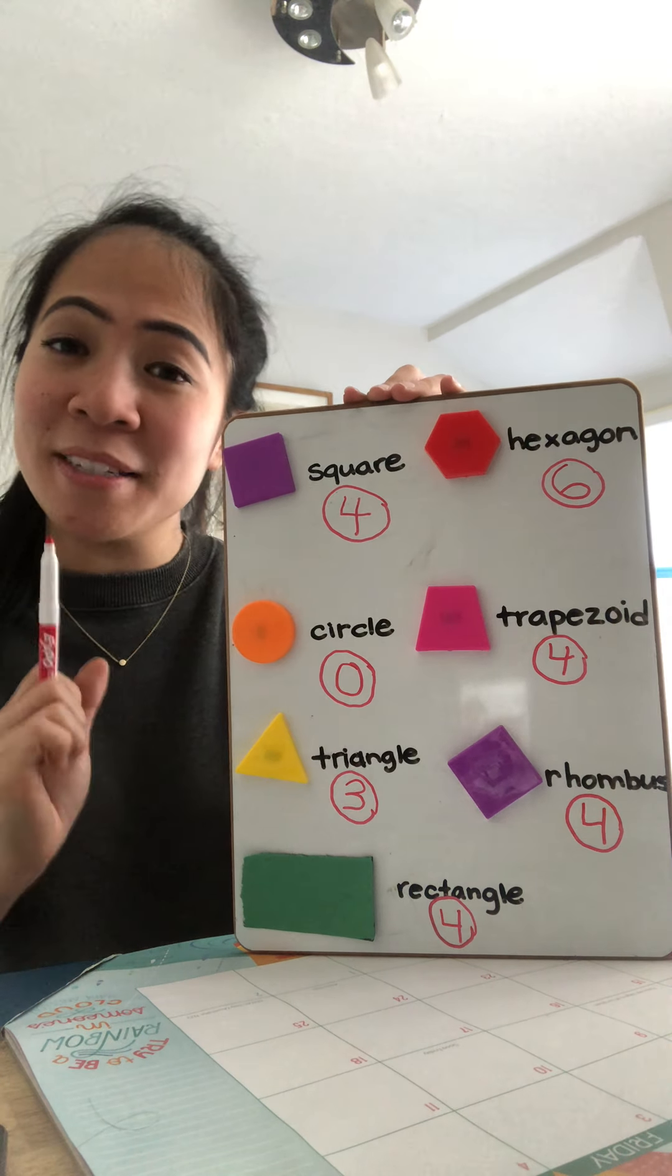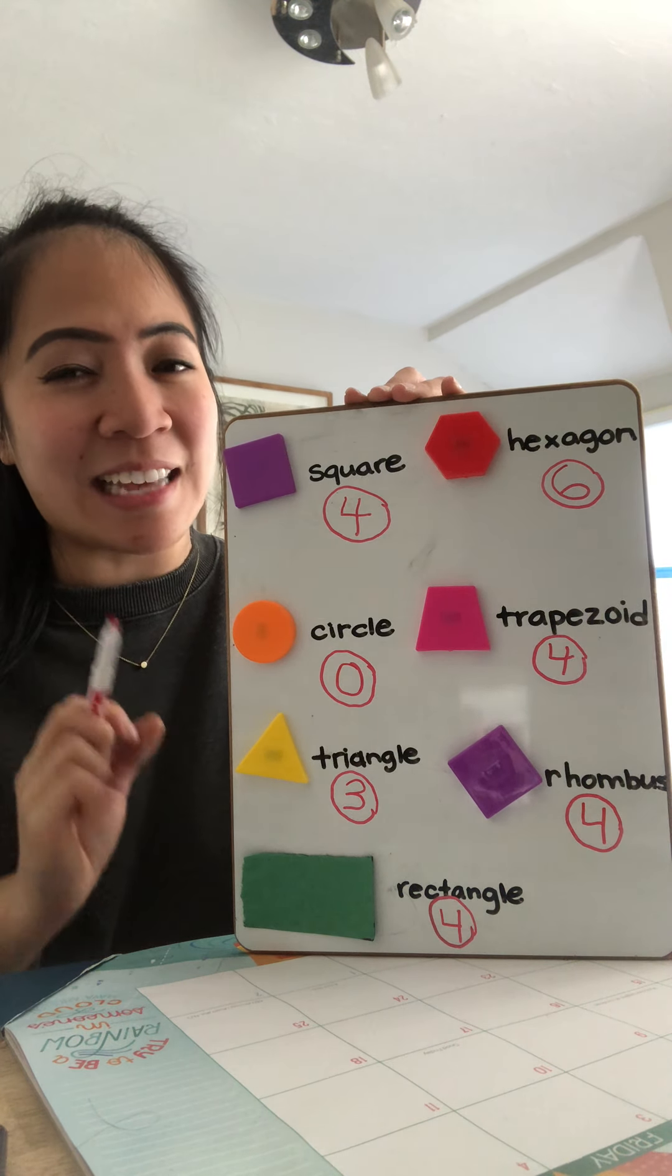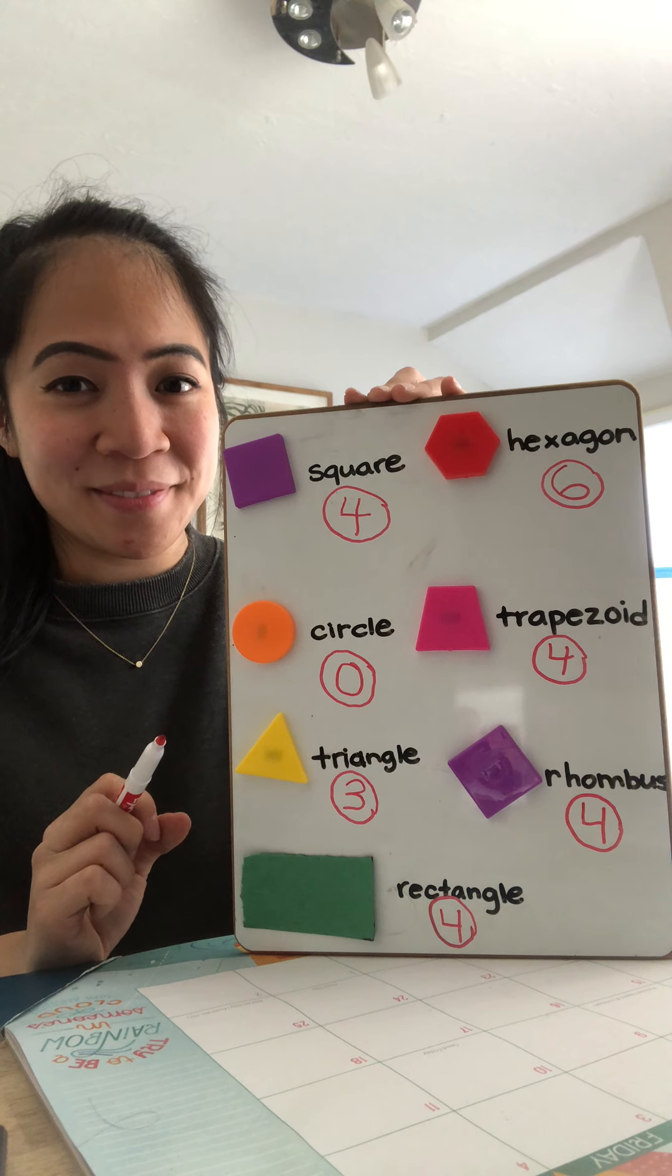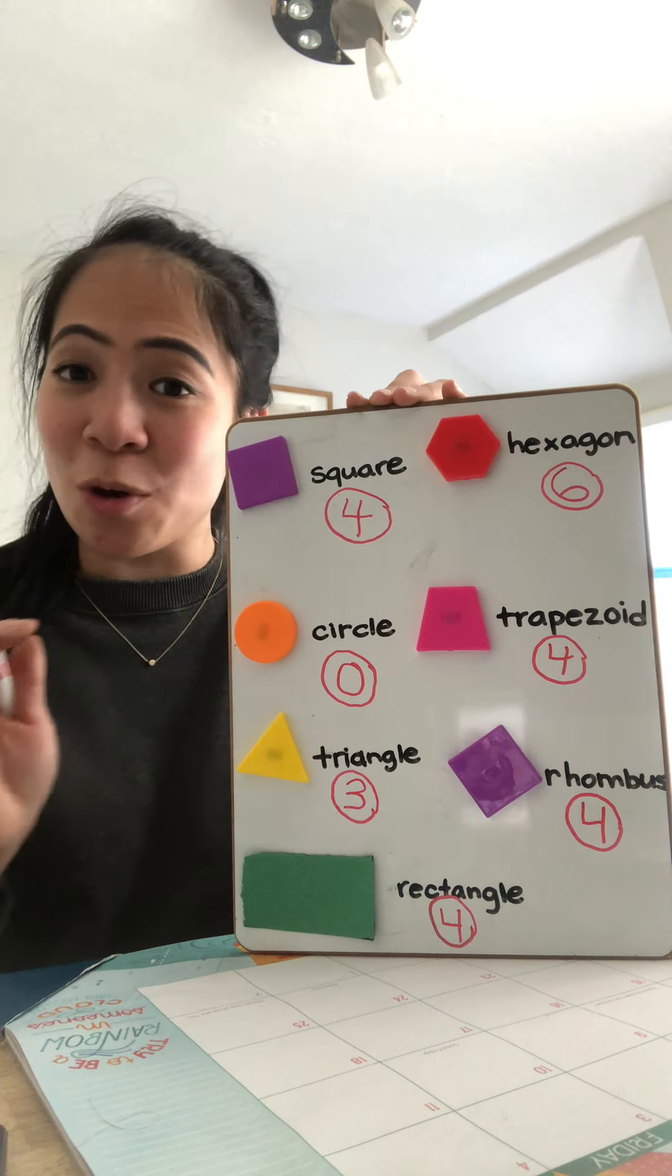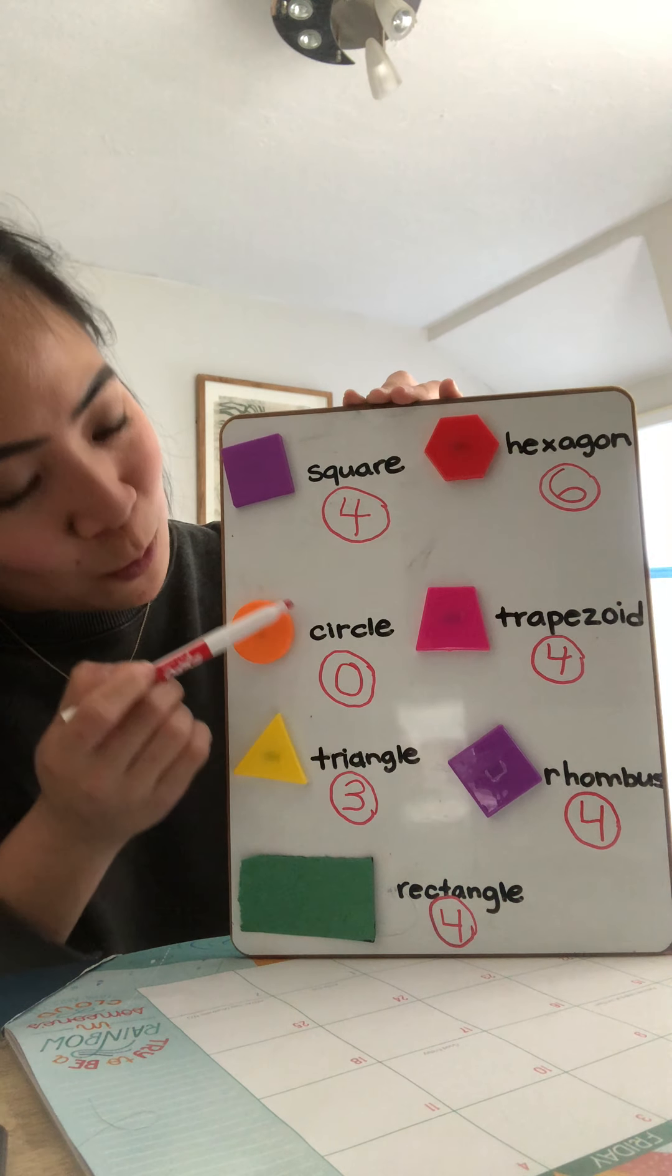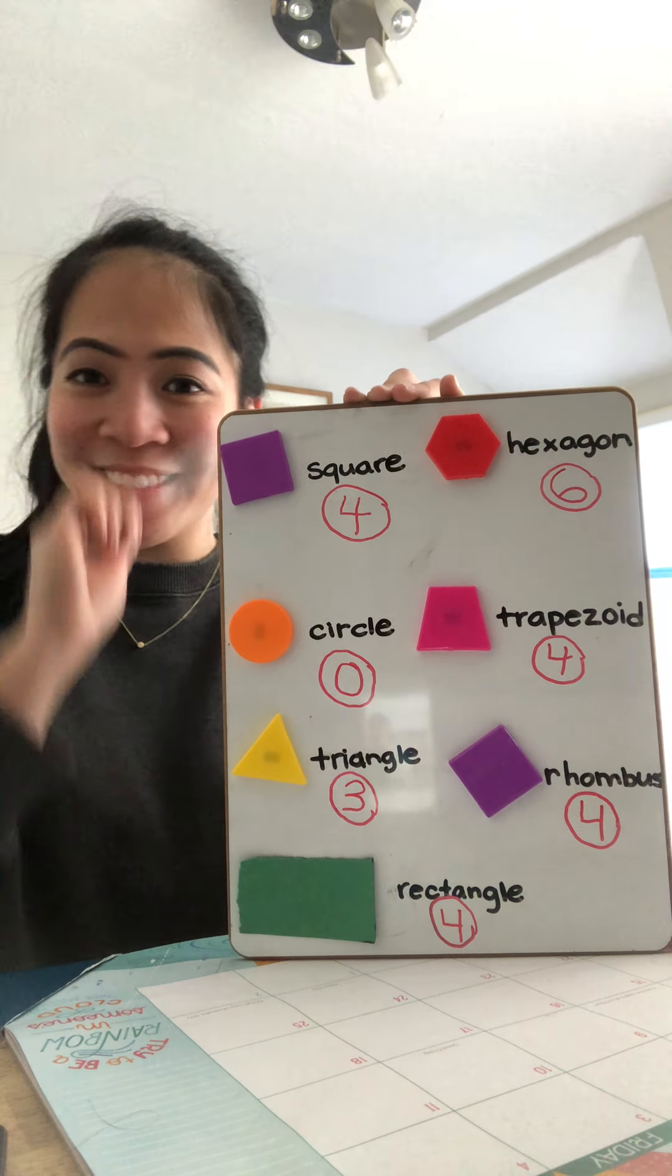And can anyone tell me which shape has the least sides? Circle. Because the circle has no sides. It's got no sides. Just one big round circle.